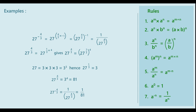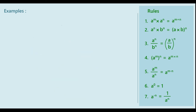Observe carefully the use of various rules of indices we used while solving this. Let us consider one more example. Consider 4 raised to minus 3 upon 2. Can you simplify this? Try on similar lines and get the answer. I think now you have understood that we can use all the rules developed for natural number powers and write similar rules for rational number powers as well.